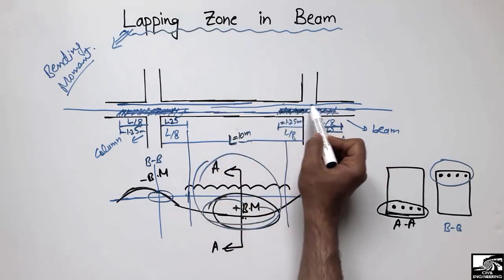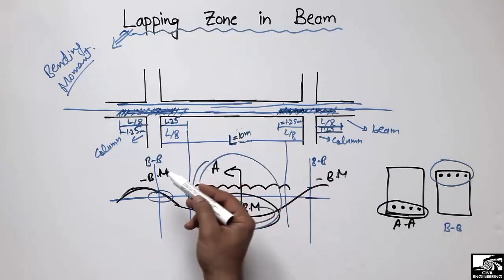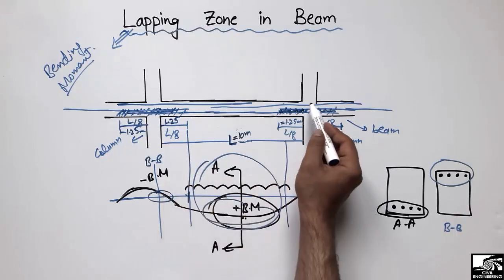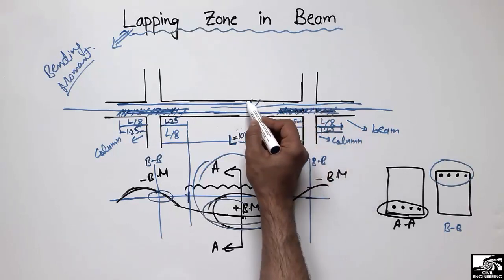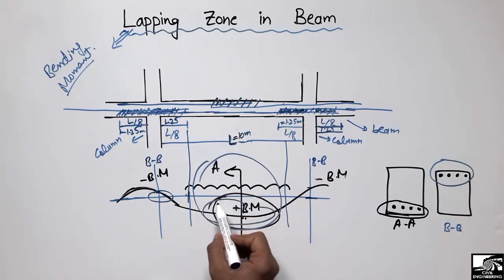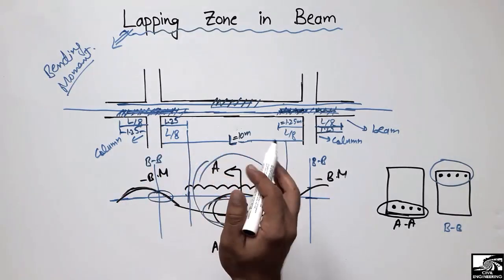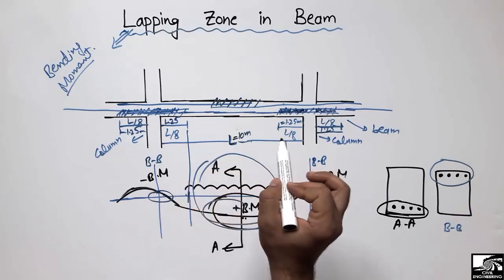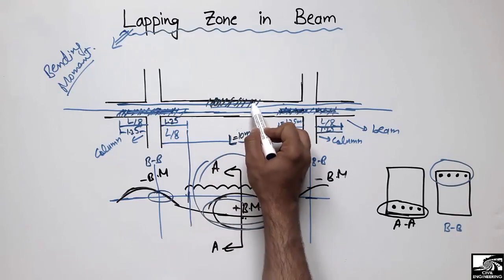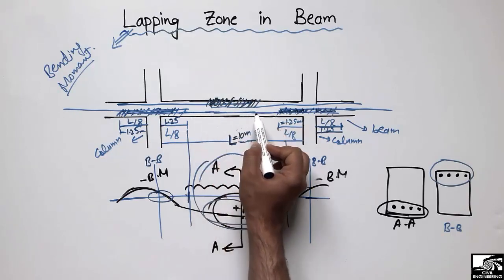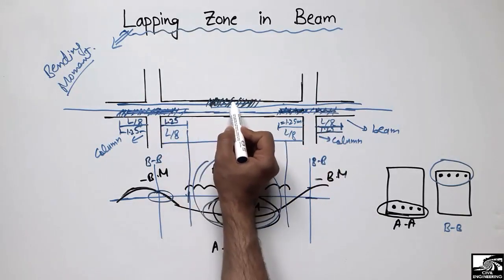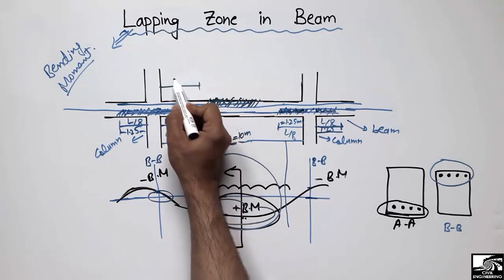We should not overlap at the negative top section because the negative bending moment is maximum at the top — that is why we should not overlap there. But we are allowed to overlap at the mid-section, because at the mid-span there is no negative bending moment. So we are allowed to use the overlapping of the steel bars at the mid-section for the top portion of the beam, in the case of negative bending moment.